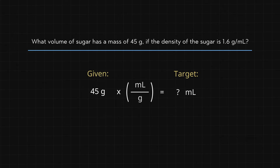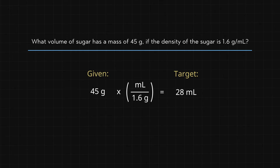In doing this, we must get the units to cancel correctly. So we must have milliliters on the top and grams on the bottom. The density is 1.6 grams per milliliter, so the 1.6 must go in the bottom. And we have our answer: 28 milliliters of sugar will give us a mass of 45 grams.